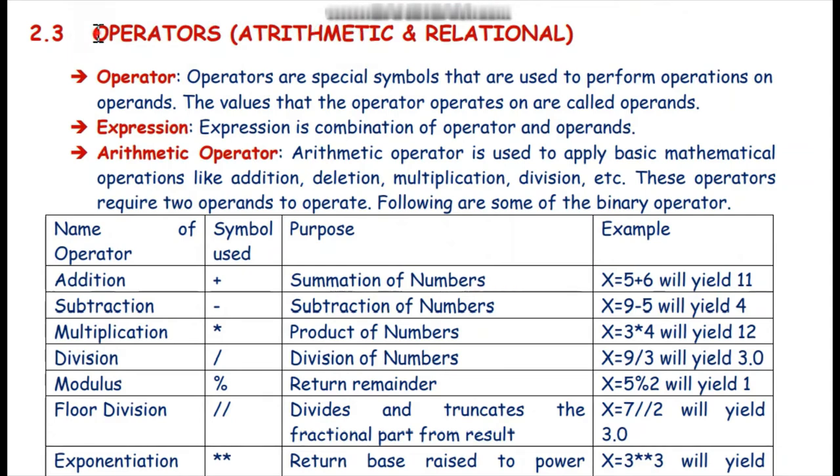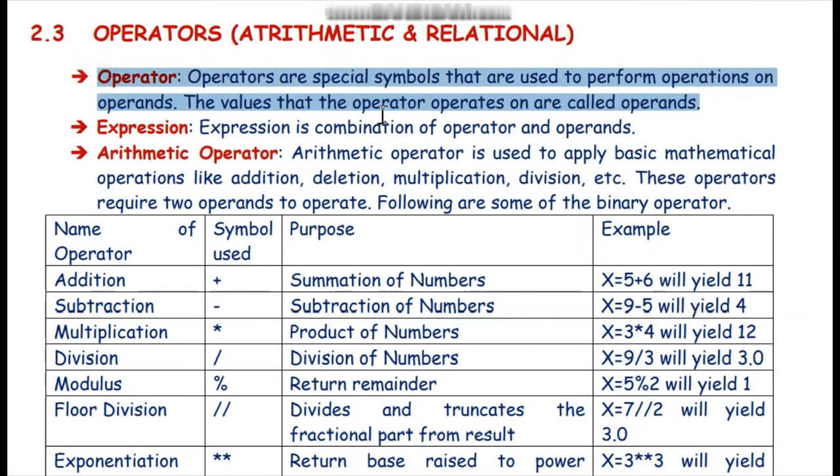Next is a very important topic: operators. We are discussing two types of operators, arithmetic and relational. First, we need to understand what we mean by an operator. Operators are special alphanumeric symbols which are used to perform operations on operands. For example, if we are adding two values, suppose 2 plus 5, here plus is an operator working on the operands 2 and 5. We have multiply, divide, and various arithmetic operators.